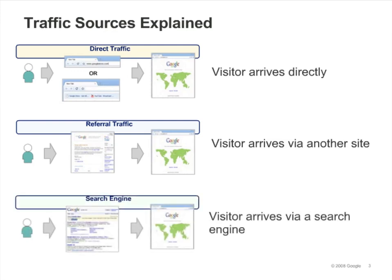Search engine traffic represents visitors who click on a search results link in Google, Yahoo, or any other search engine. Search engine traffic can be organic — in other words, free search results — or paid. Paid search engine traffic is pay-per-click or cost-per-click traffic that you purchase from a search engine, for example, on Google AdWords.